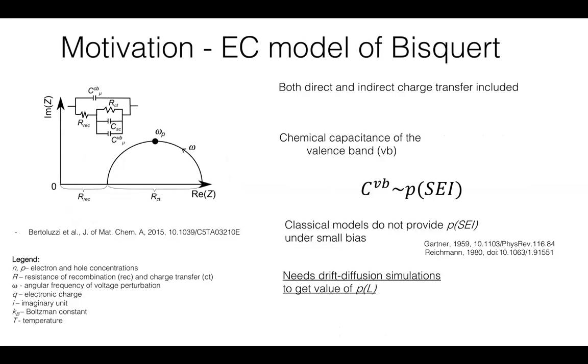However, this equivalent circuit model typically needs some assumptions. In this left picture of the equivalent circuit of Bisquert Group from 2015, several capacitances of the conduction band, valence band and space charge capacitance are shown along with the resistance of charge transfer and recombination resistance.